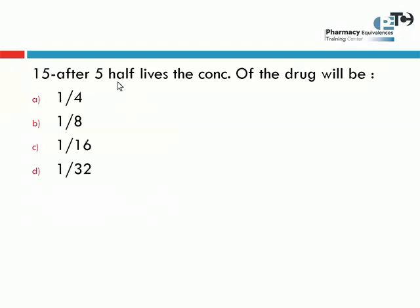In this question, back to calculations: after five half-lives, what will the concentration of the drug be? Here is an easy way to calculate this — there is also an equation, but another way you can calculate is to suppose that the initial concentration is one.